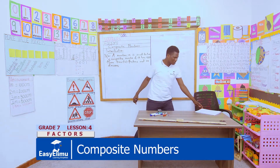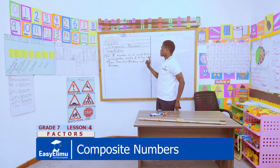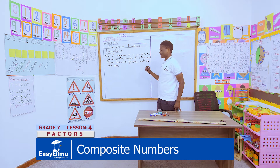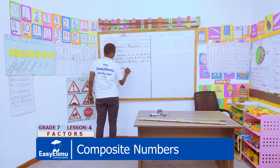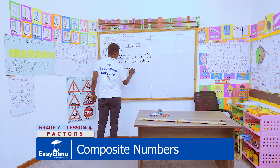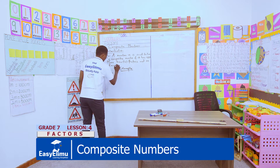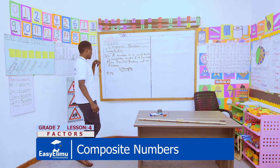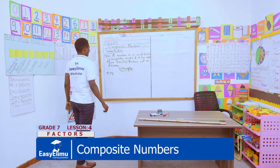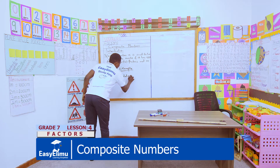So with respect to composite numbers, a number with more than two divisors or more than two factors is composite. For example, let us look at a number like 12. Let us highlight all the possible factors of 12.